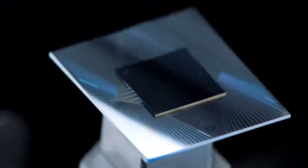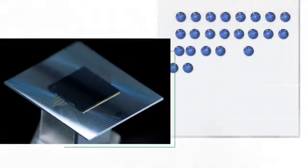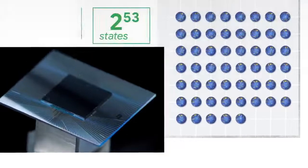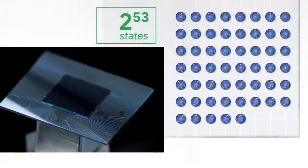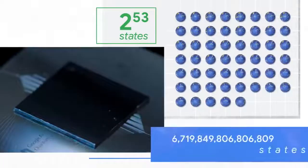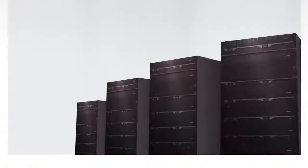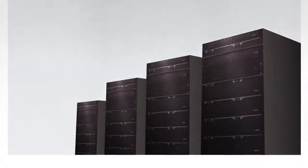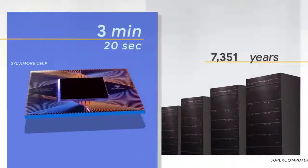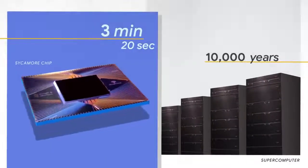The processor that achieved quantum supremacy is called the Sycamore processor. It's parallel-processing 2 to the 53 states, which is 10 million billion — that enormous amount of parallel processing is what gives it its power. When we run small chunks of the computation it outperforms the largest supercomputer in the world. Our estimate is that it would take thousands of years for a classical machine to complete the full computation.